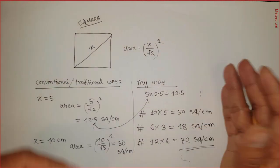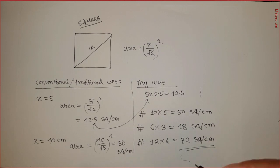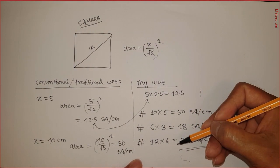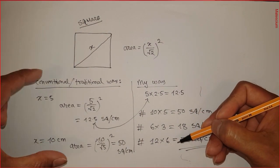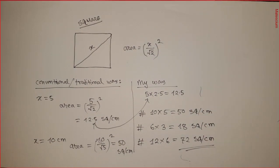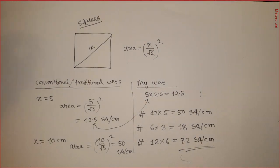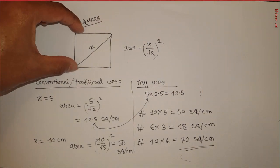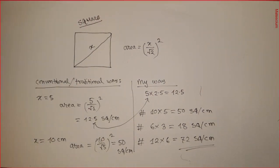So you will think: which way will you choose — the traditional conventional way, or the way I'm showing you? I believe this way is much simpler. It's up to you which method you use to calculate the total area of a square.